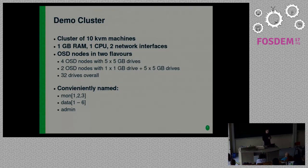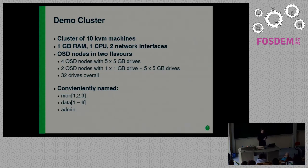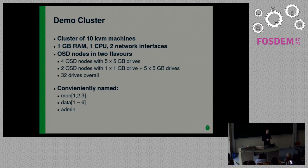I have this demo cluster: 10 virtual machines, fairly small. They have two network interfaces each because Ceph likes a cluster network and a public network. There are six OSD nodes all in all; all of them have five five-gigabyte drives, and two OSDs have an extra one-gigabyte drive, giving us 32 drives overall, meaning we can deploy at most 32 OSDs. They're fairly conveniently named: mon1, mon2, mon3, and data1 through 6. The admin node is basically just my SALT master.